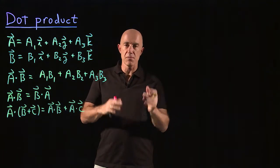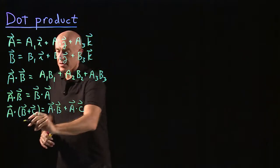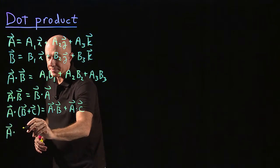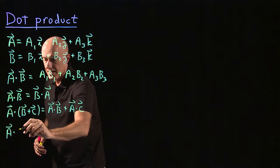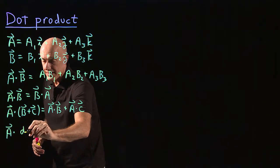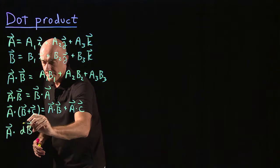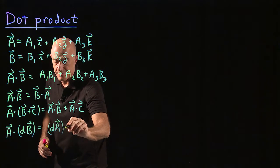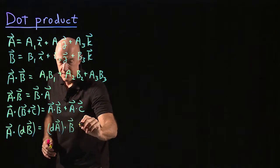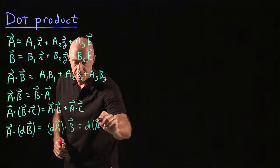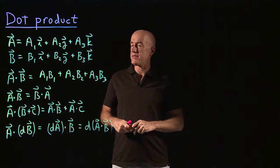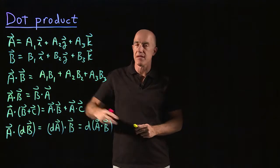When you multiply a vector by a constant — let's call the constant D — then A dot (D times B) equals D times A dot B. So that's the definition of the dot product and its algebra.